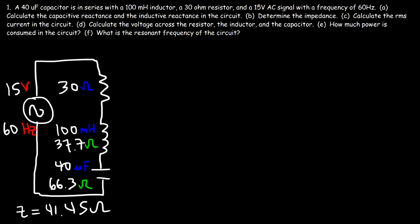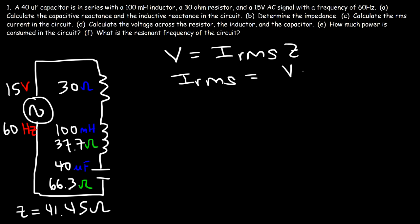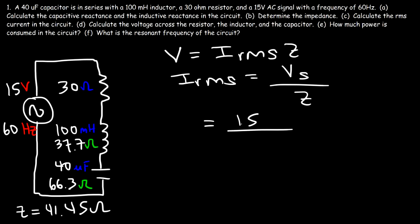Part C: calculate the RMS current in the circuit. We use the formula: voltage equals RMS current times impedance. So the RMS current is the source voltage divided by the impedance — that's 15 divided by 41.45 ohms. The RMS current that flows in this circuit is 0.3619 amps.